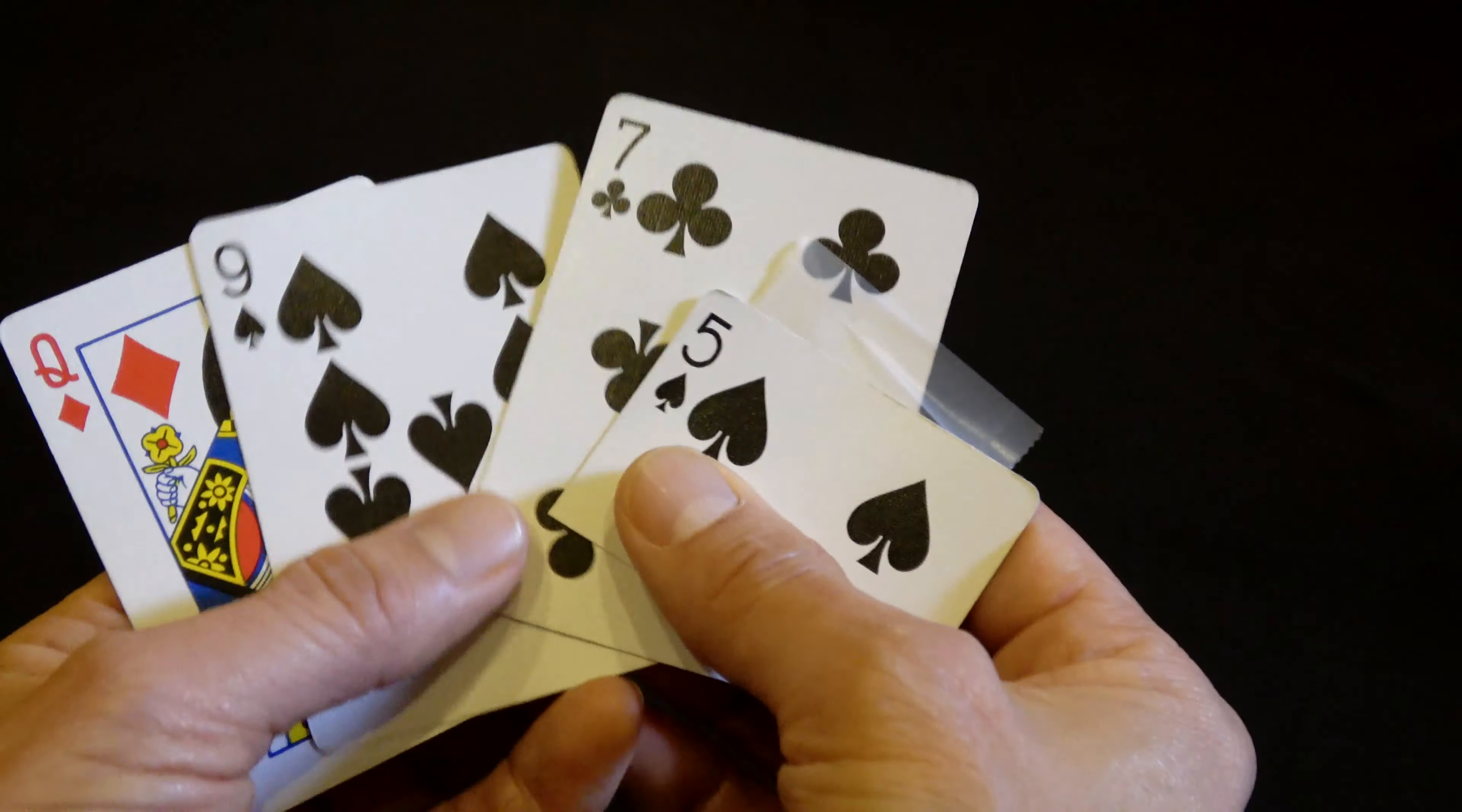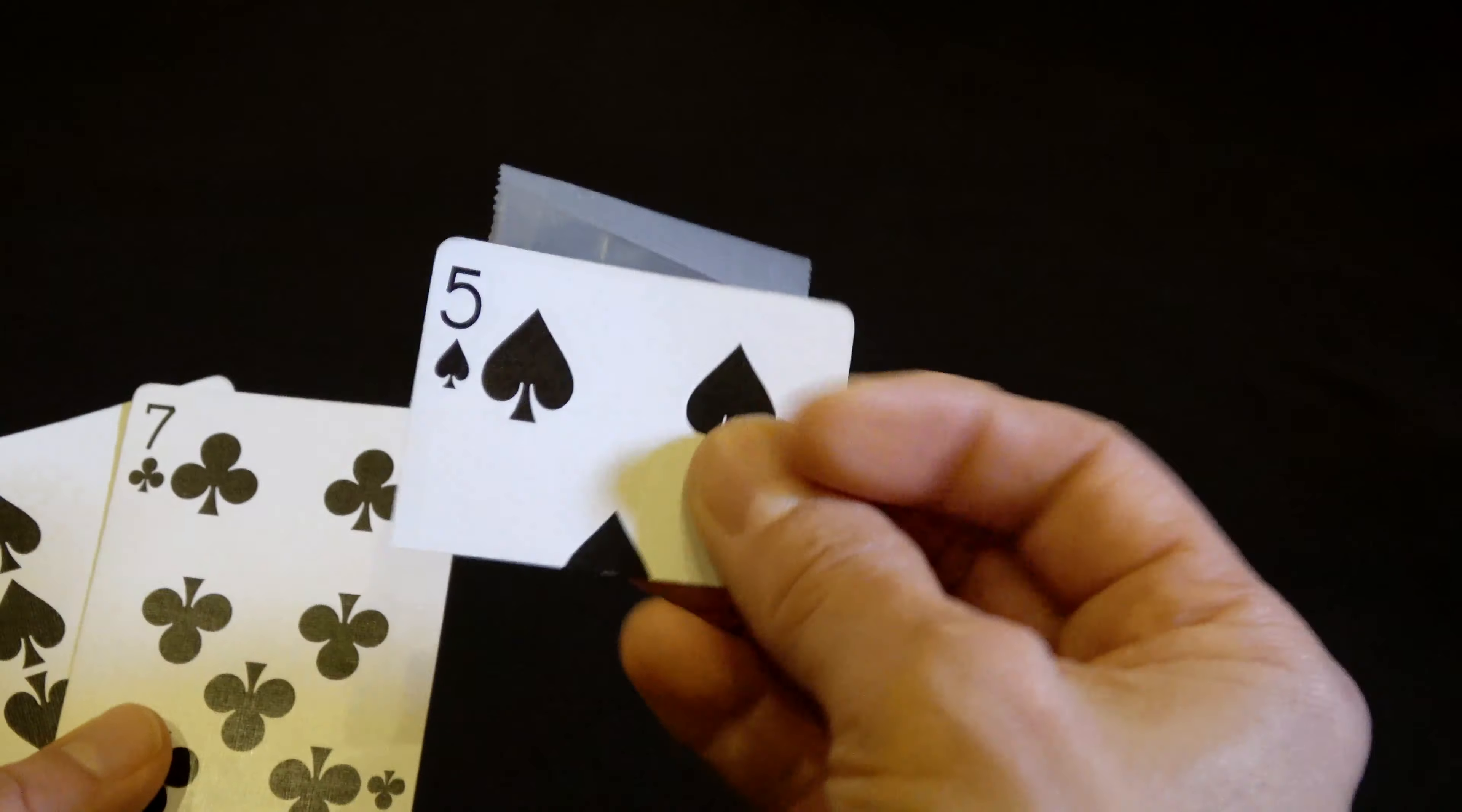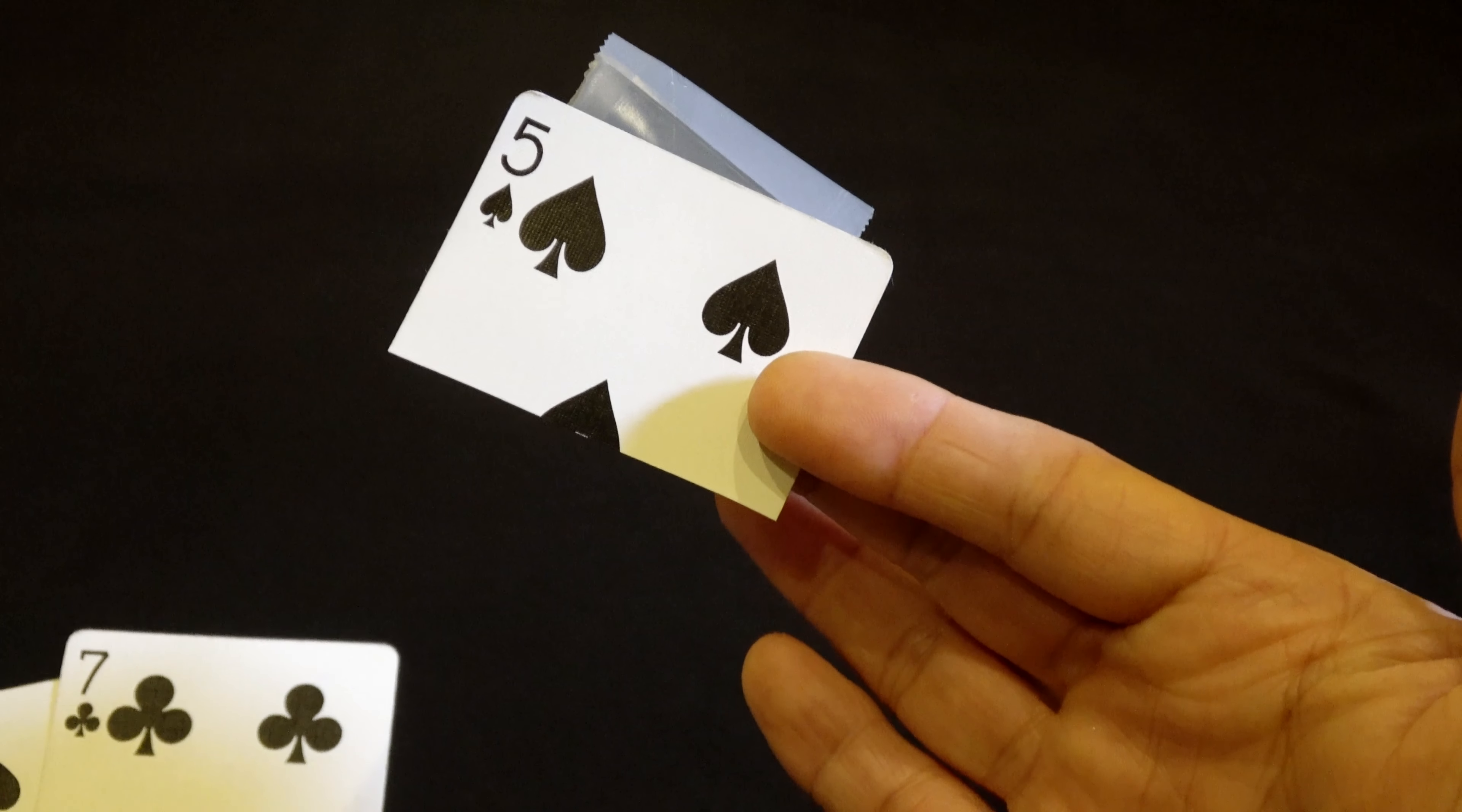Once you have your cards made, which they're just ordinary cards at this point, you're gonna take one of the number cards and cut it in half as I did here.